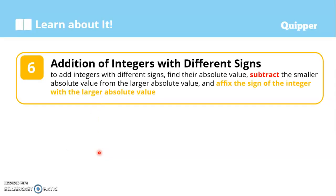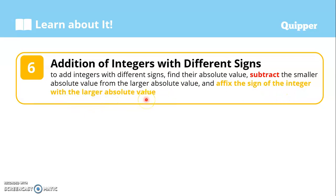Now, how do we add integers with different signs? Different signs means one is positive and the other is negative. To add integers with different signs: find their absolute values, subtract the smaller absolute value from the larger absolute value, and then affix the sign of the integer with the larger absolute value.